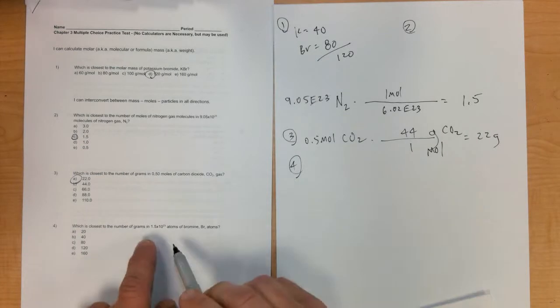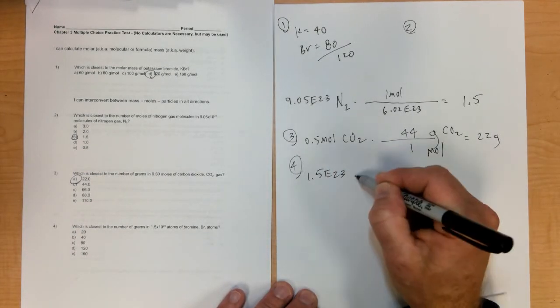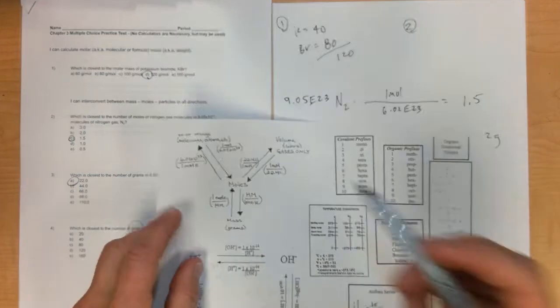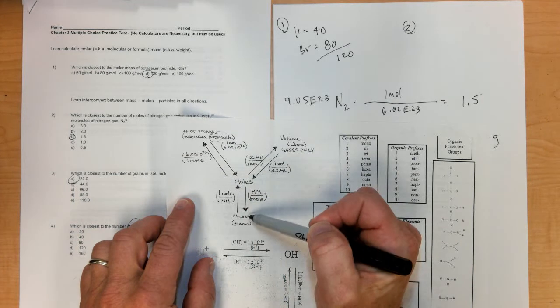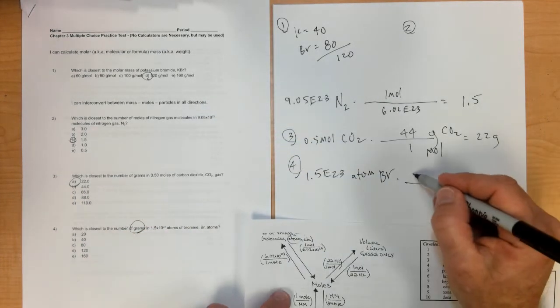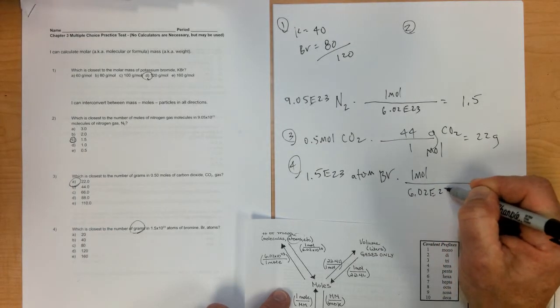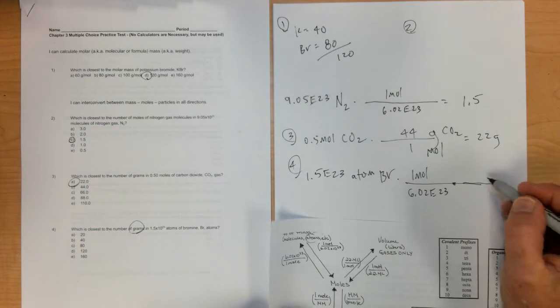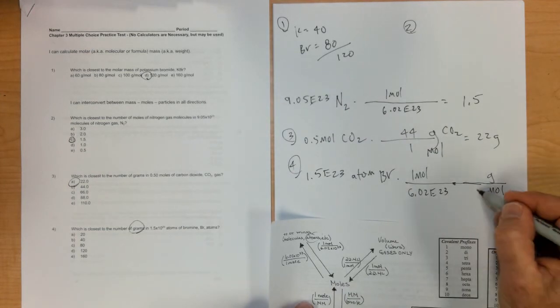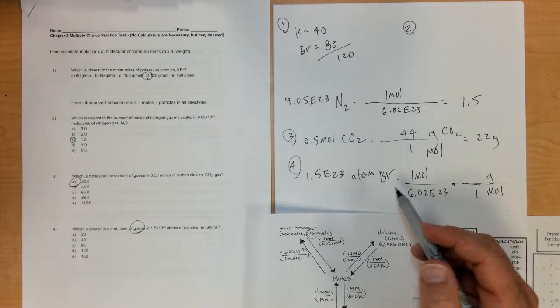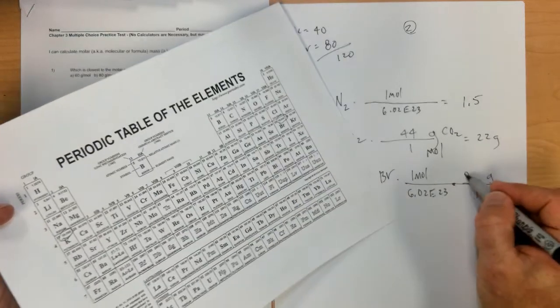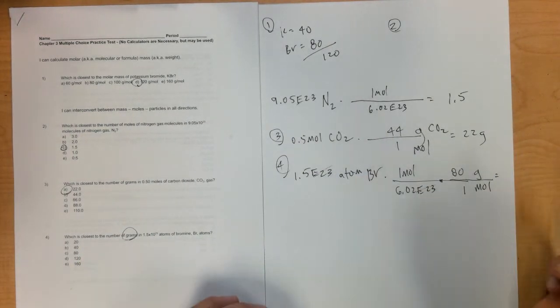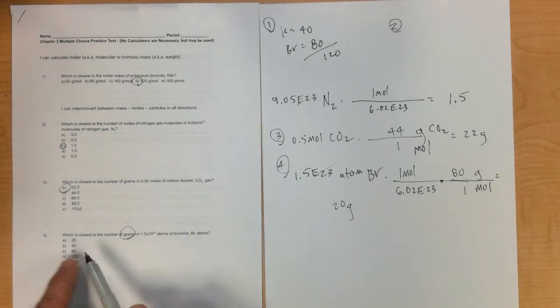Number four: which is closest to the number of grams in 1.5 times 10^23 atoms of bromine? We go from atoms to moles and then to grams, a two-step problem. First step: in one mole, there are 6.02 times 10^23 atoms. Then we go from moles to grams, so molar mass goes on top. Molar mass of bromine is approximately 80. We have 1.5 divided by 6, which is about one-fourth. The 10^23 cancels, and one-fourth of 80 is about 20 grams, letter A.